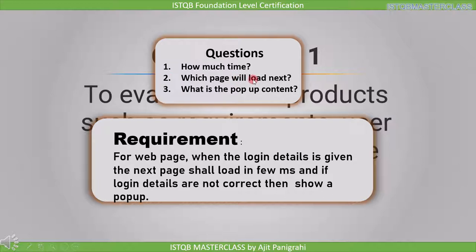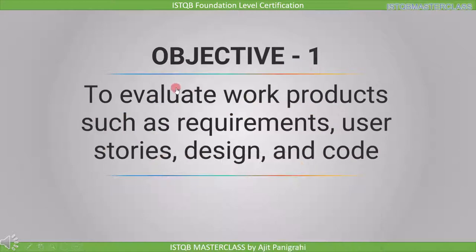The second open point is: which page will load next? This is also not given — they say 'next page shall load' but what the content of that page will be is not mentioned. The third open point is: what is the popup content? They say the popup should appear, but what the content of that popup will be is not mentioned. So this requirement is not complete, and these are the questions we need to clarify. This is why it is necessary to evaluate work products such as requirements, user stories, design, and code.